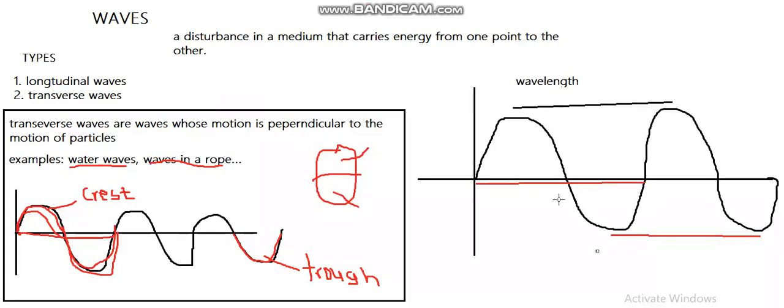So wavelength is just the distance between two successive crests, or it can be the distance between two successive troughs. Also, the wavelength is measured in meters. Those are the units for the wave. Then also a term like period is used. What is period?